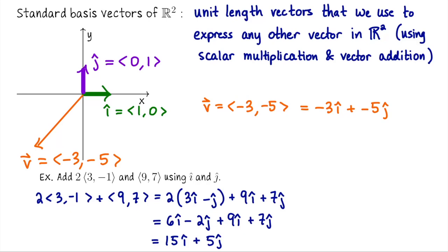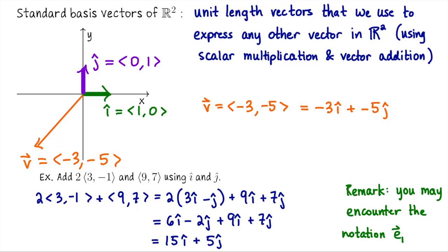Before the standard basis vectors of R3, let me mention that i and j are what we use in this course, though other references may call these vectors e1 and e2. Those using e1 and e2 notation usually write a vector symbol over them, whereas with i and j it's almost always a hat because they are unit length vectors.